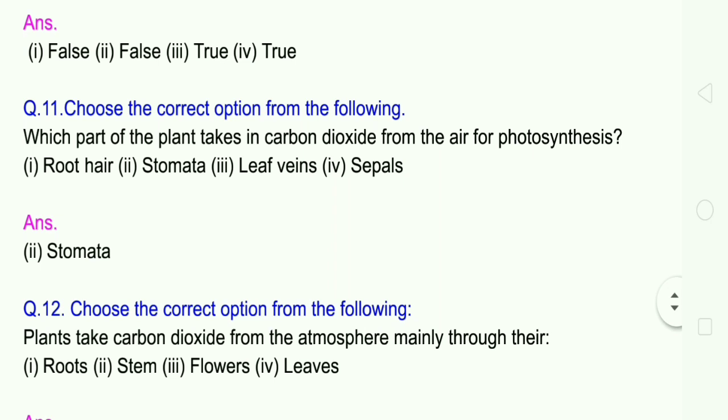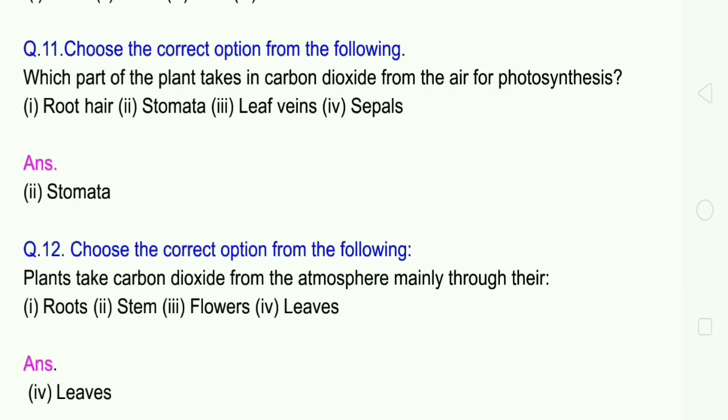Question 12: Choose the correct option. Plants take carbon dioxide from the atmosphere mainly through their: 1 roots, 2 stem, 3 flowers, 4 leaves. The answer is leaves. Leaves do the breathing process.